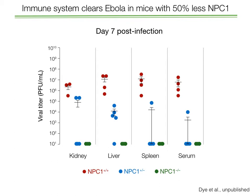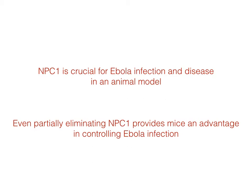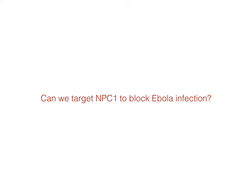This raises the possibility that a drug reducing the amount of NPC1 temporarily available to the virus could provide protection against Ebola, even without eliminating all NPC1. When you don't have NPC1 permanently, you develop the neurodegenerative disorder — but this is a very slow, progressive process. In contrast, Ebola is a highly acute infection decided within one to two weeks. So if we can reduce the amount of NPC1 in patients partially or completely for a short period of time, we should allow these individuals to fight off the infection. The conclusion is that NPC1 is crucial for Ebola infection and disease in an animal model, and even partially eliminating NPC1 provides mice an advantage in controlling the infection.